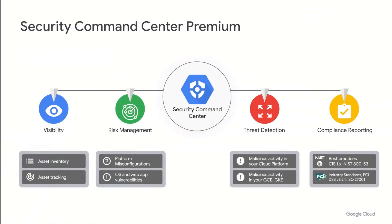Security Command Center is Google Cloud's native security solution that federates security insights across your organization. You can think about it in four areas of value. First, asset and resource tracking. If you don't know what you have deployed, how can you secure it? Cloud Asset Inventory helps customers gain visibility into their ever-expanding set of assets and resources to understand how much and of what they've got deployed, helping eliminate any security blind spots.